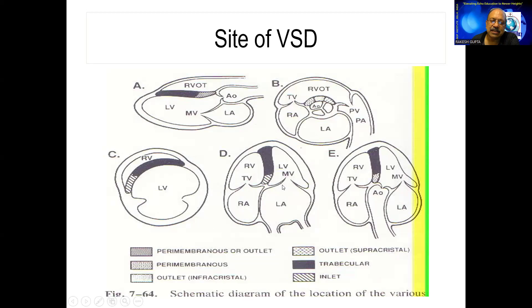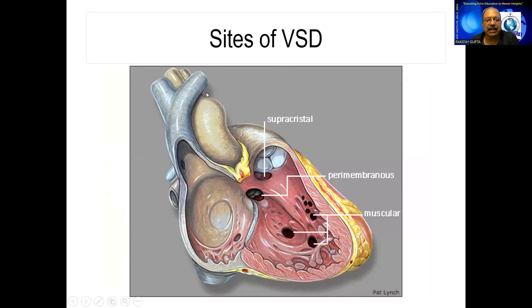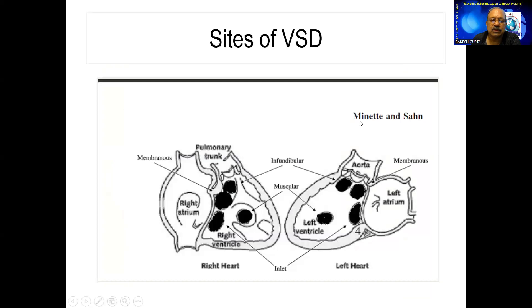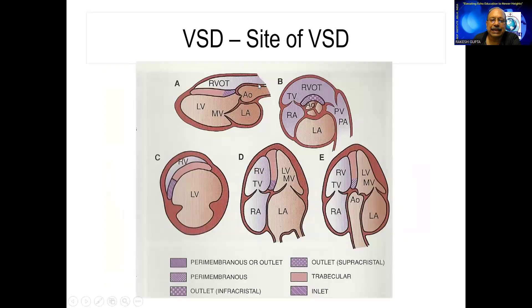If the VSD is seen when the aorta is closed — that is in the four-chamber view — this is known as inlet VSD. If in the five-chamber view the VSD is seen, we have outlet VSD. If in the parasternal long-axis view you see a VSD close to the aortic valve, that is perimembranous VSD. In the parasternal short-axis view at the aorta: this is perimembranous VSD; this is doubly committed VSD associated with AR most of the time; and this is muscular VSD.